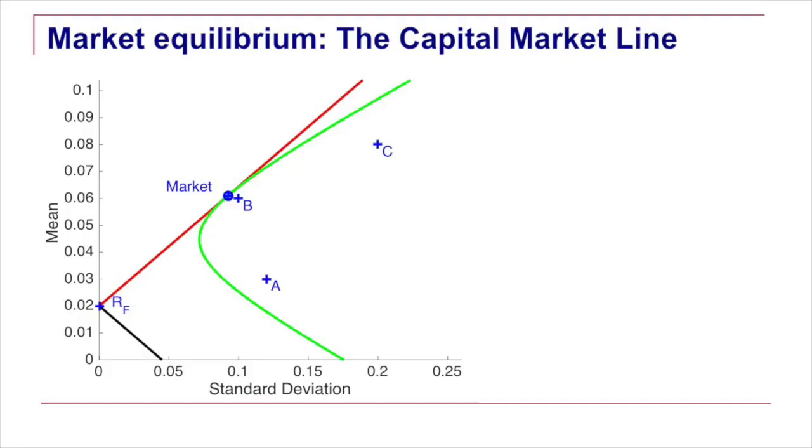So the coordinate of that point, the coordinate of this market point, are the expected return on the market and the risk of the market. So for example, we could consider that a stock index like the S&P 500 is a good representation of what the market actually is.